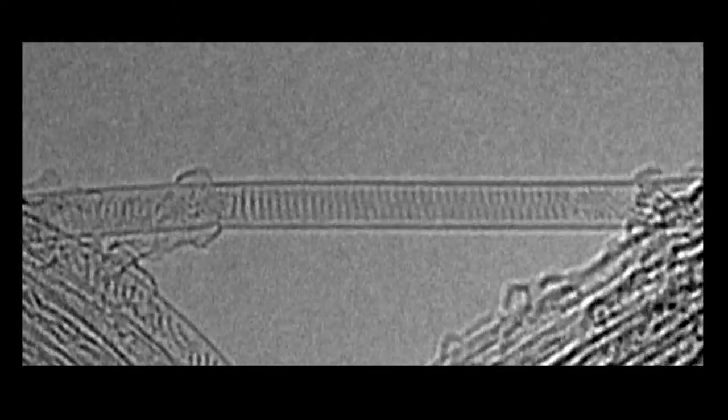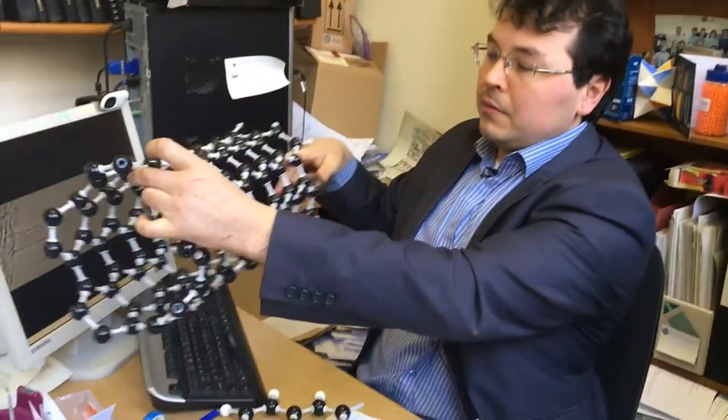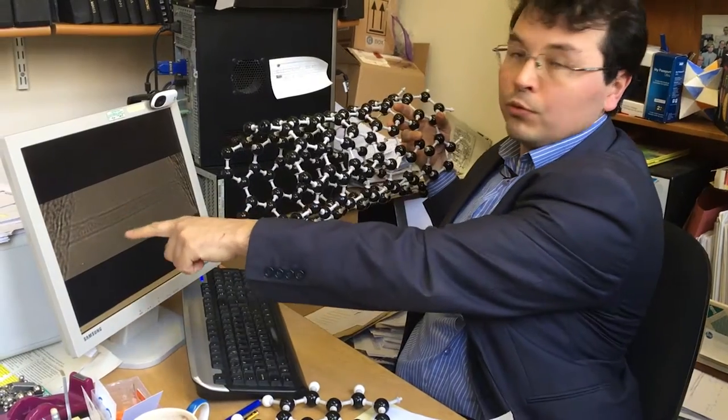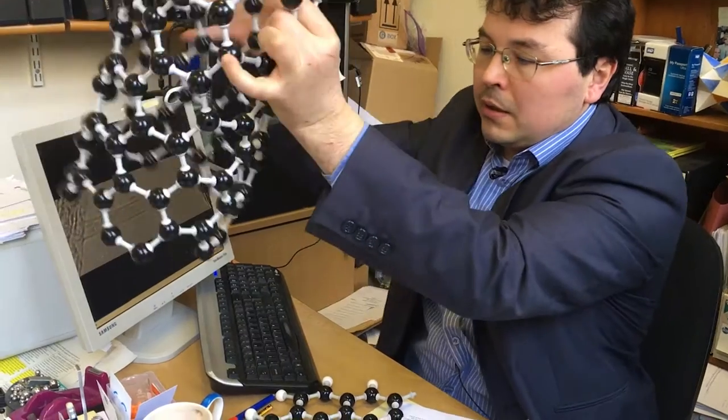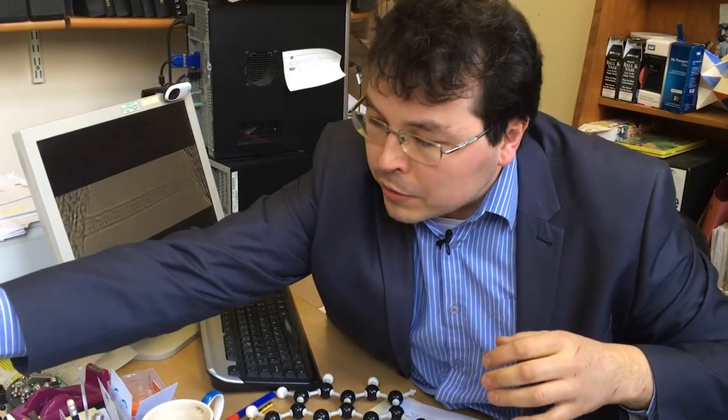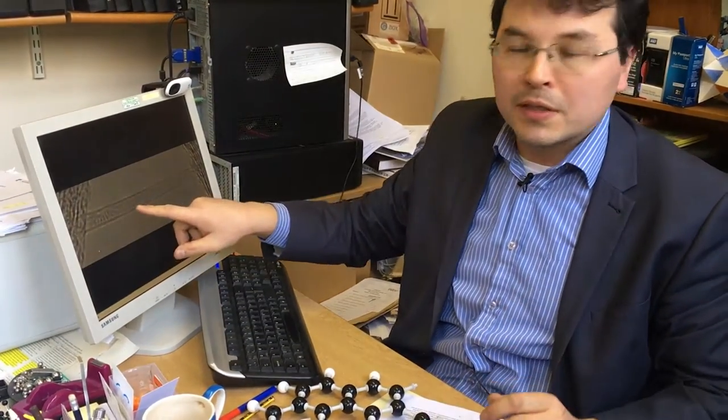What you see here on the screen is the world's smallest test tube, carbon nanotube. It's essentially made out of a single layer of carbon. And what we're seeing here is two side walls of this nanotube as two parallel lines. On this electron microscopy image, you can see that the carbon nanotube is not empty. There is something inside.